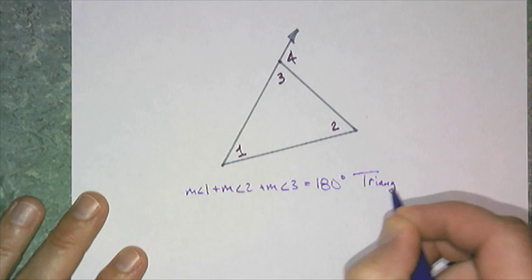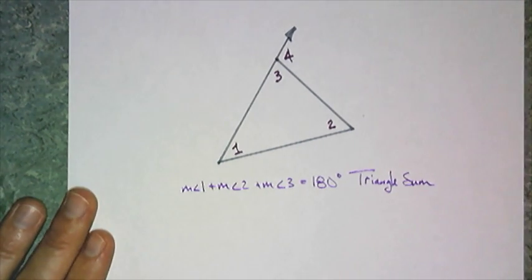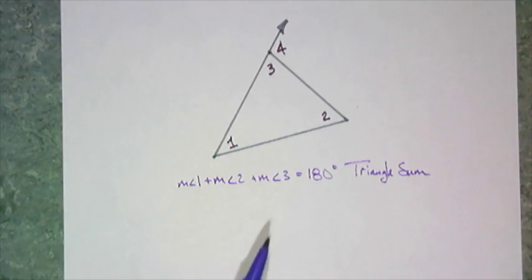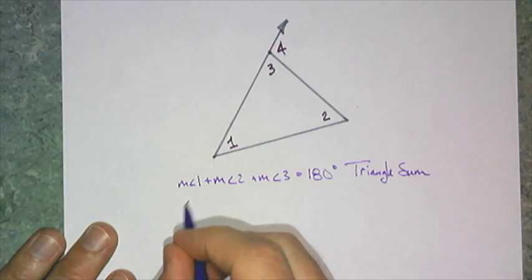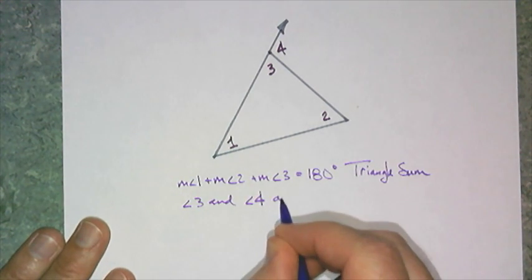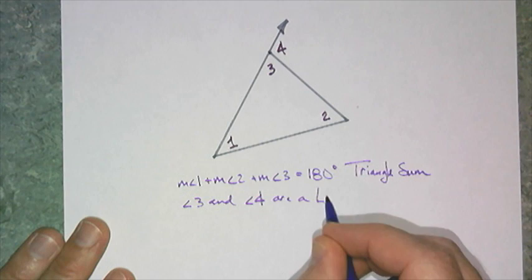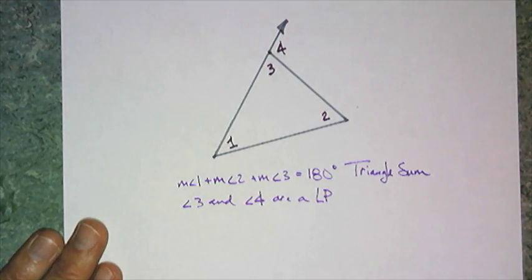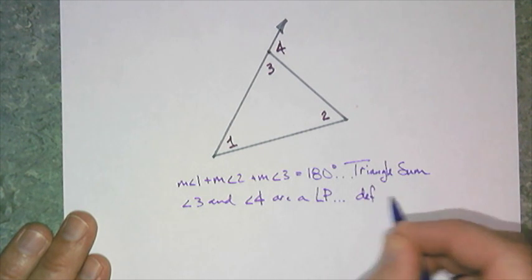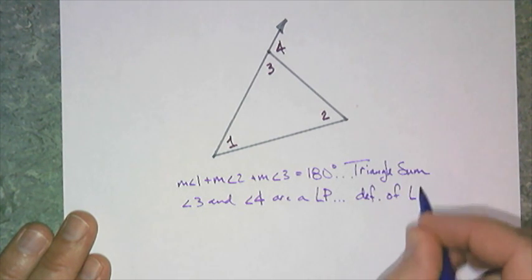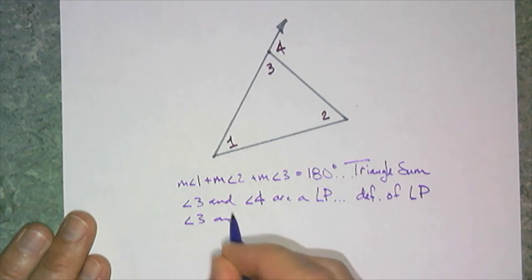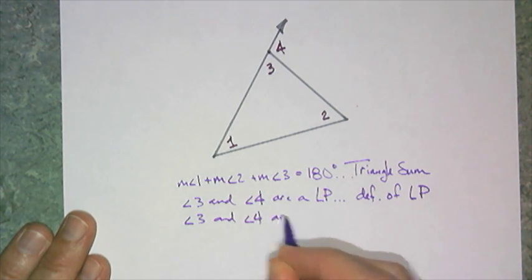I also know that angle 3 and angle 4 are a linear pair. And I know that by definition of a linear pair.